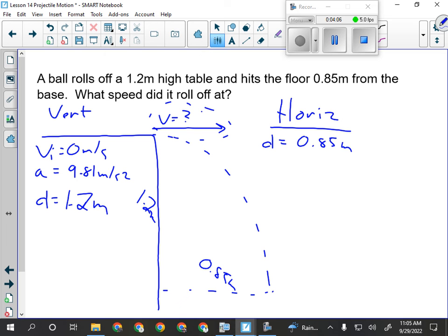So, if I want to find V horizontal, what else do I need? Time. We're always looking for time. At some point, you're going to have to find time in a projectile motion question, because it's the one thing you can use on both sides. So in this case, T is going to equal the square root of D over one-half of A. As it always does, so that'll be 1.2 divided by 0.5 times 9.81.